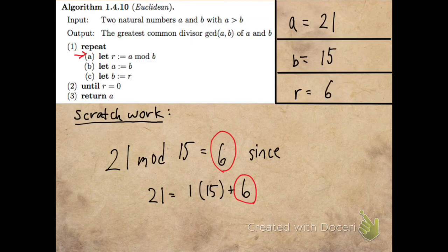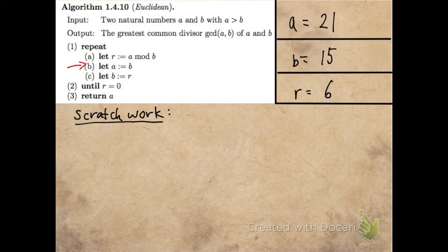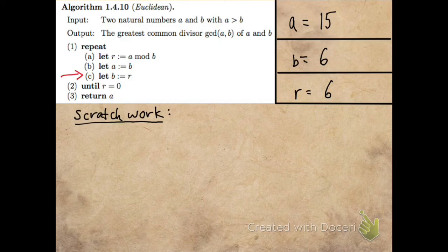I write that in for R and move to the next step. This is where I move those two numbers up. So I'll let A equal B, and I'll let B equal R.